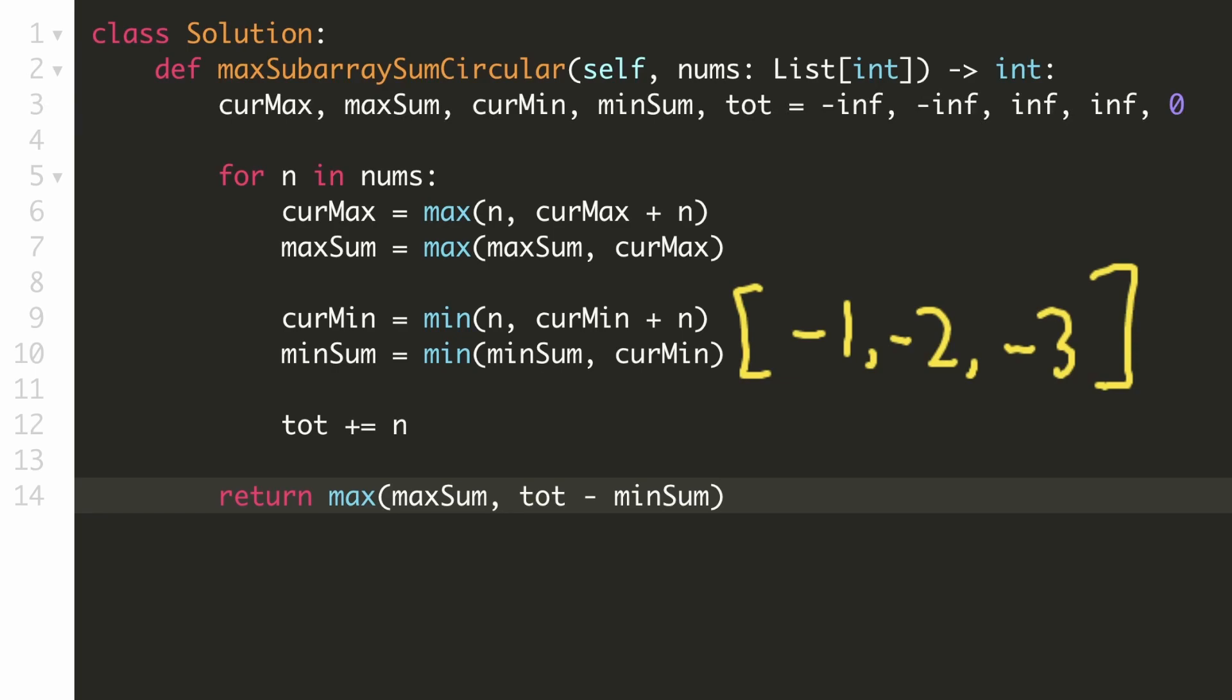Now there's one scenario that we have to handle when our array contains only negative numbers. Since all the numbers are negative, when we consider the whole array, it would result in the minimum subarray sum. This would also be equal to the total of this array. So this difference would be zero.